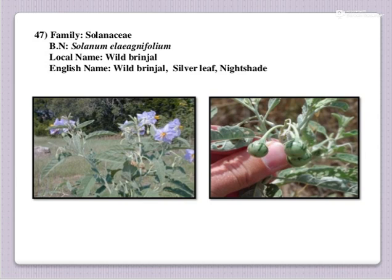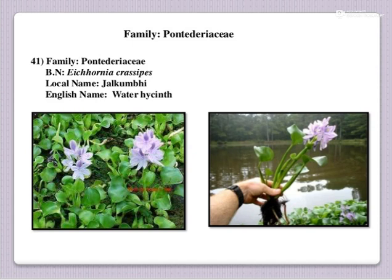The second one is wild brinjal. Local name: wild brinjal. Botanical name is Solanum elaeagnifolium. English name is wild brinjal, silver leaf or nightshade. Family is Solanaceae. This is wild brinjal. The next weed is Jalkumbi. English name is water hyacinth and botanical name is Eichhornia crassipes.